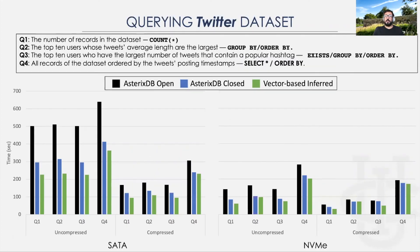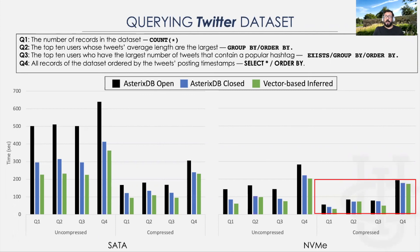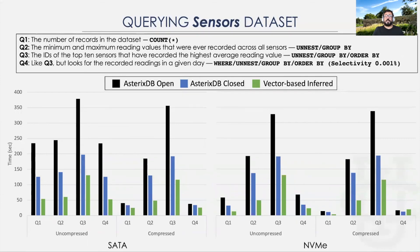When we query the Twitter data set, the query execution time against the inferred dataset type took less time to execute on the SATA SSD. However, after compression, the differences between the inferred and closed types become negligible on the NVMe SSD due to its high read throughput. In the sensors data set, which has mostly numeric values, querying the inferred dataset type took less time compared to the other two. This is due to the smaller storage overhead in the vector-based format, which was more suitable for numerical values, as detailed in the paper.